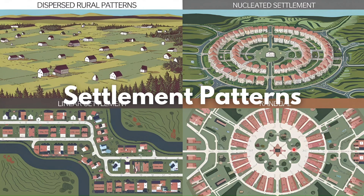We're going to be looking at various examples of settlement patterns such as dispersed, nucleated, linear, and radial. We're going to be looking at ways to identify them, the definition, as well as the advantages and disadvantages of each. So let us begin with the first one.